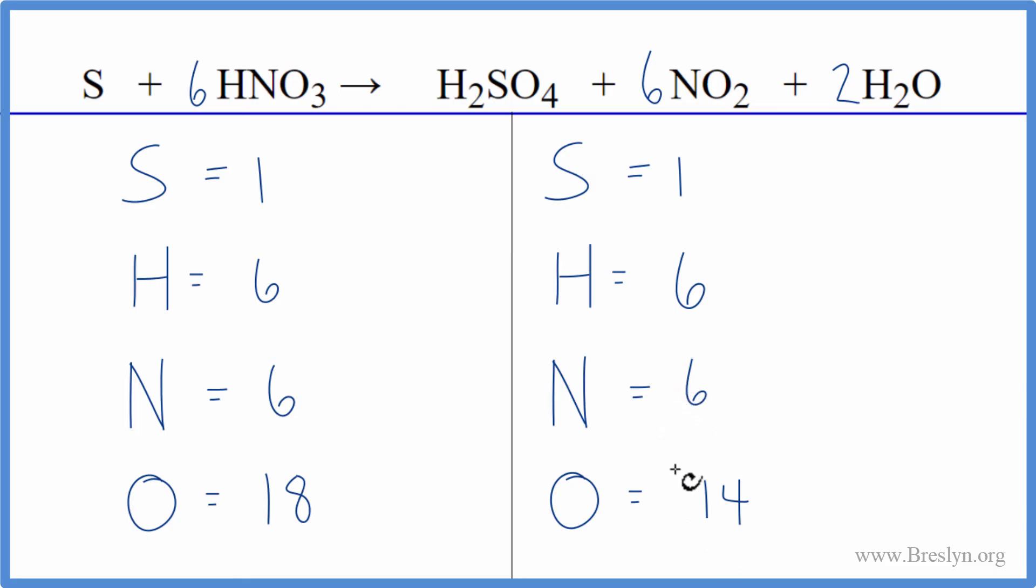And we need to update the oxygens again, because the six, it applies to everything here. So for our oxygens, four plus two times six is 12. That's 16 plus one times two. That gives us 18. And we're done. This equation is balanced.